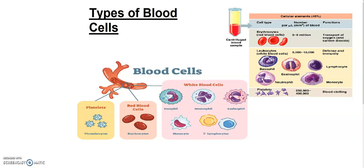You can see their number on the screen: 5,000 to 10,000. Their function relates to defense and immunity. Their five types are: basophil, eosinophil, neutrophil, lymphocytes, and monocytes.